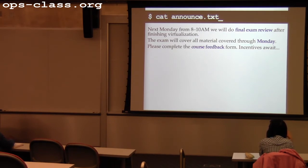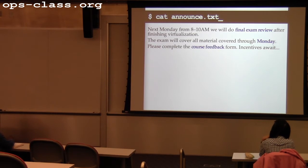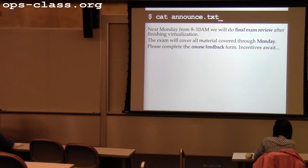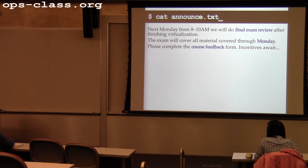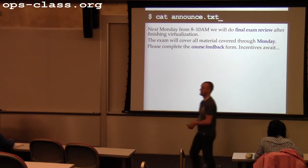The response rate on the course feedback forum jumped quite dramatically overnight, but it's still about 50%, not over 70%. The incentives are outlined on the website: 70% gets you a short answer question, 80% gets you a medium answer question, and 90% — the gold standard — would be a long answer question. These are cumulative, so you could potentially expose yourself to a great deal of the exam beforehand.